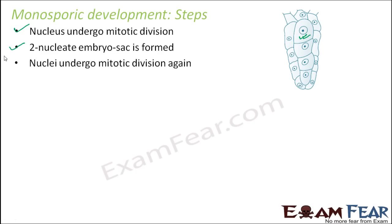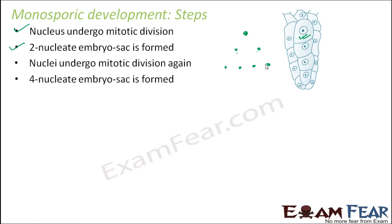Again these nuclei undergo mitotic division. Initially you had one nucleus; after the first mitotic division two were formed. Now these two nuclei again undergo mitotic division — each forms two — so a total four-nucleate embryo sac is formed, meaning that embryo sac now has four nuclei.